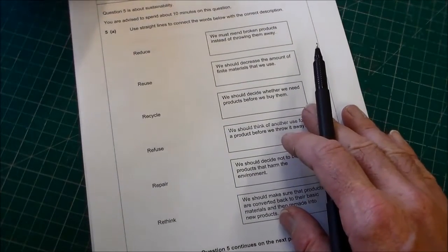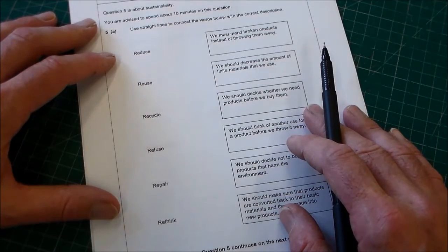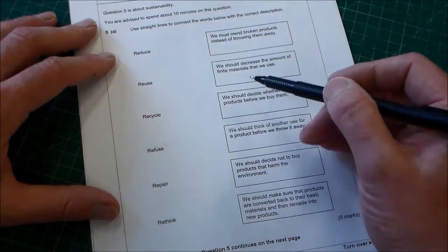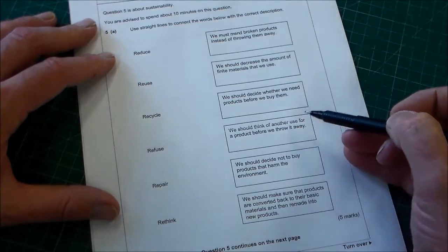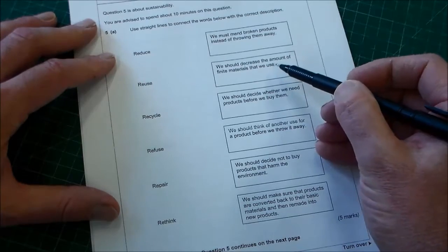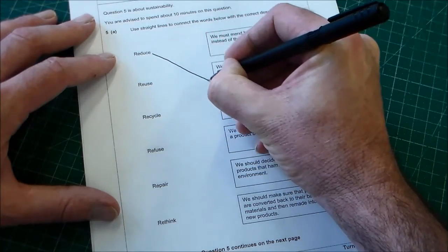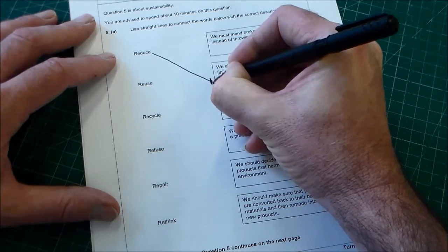We've got to draw a line across or we could number them but I'm going to draw a line across because that's what they recommend. We're looking at which one of these is reduce and that's quite simple. Which of the six Rs, we should decrease the amount of finite materials we use is reduce. I'm just going to draw a line across.